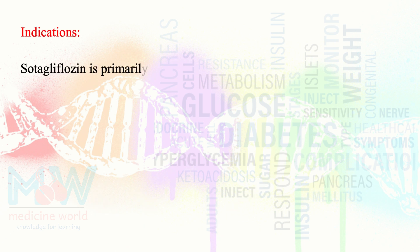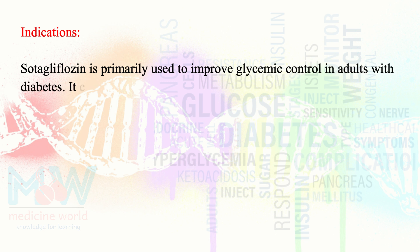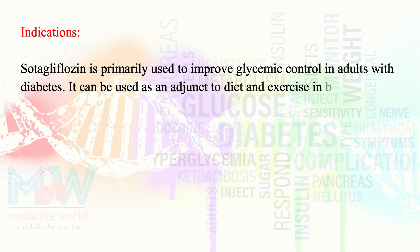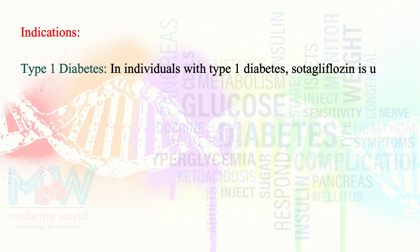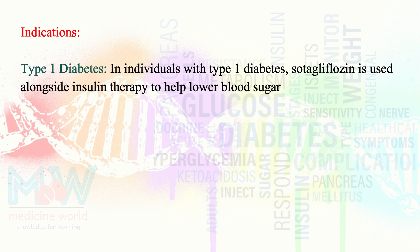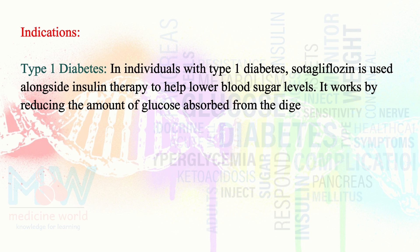Indications: Sodagliflozin is primarily used to improve glycemic control in adults with diabetes. It can be used as an adjunct to diet and exercise in both type 1 and type 2 diabetes. In individuals with type 1 diabetes, sodagliflozin is used alongside insulin therapy to help lower blood sugar levels, working by reducing glucose absorbed from the digestive tract and increasing glucose excreted in the urine.